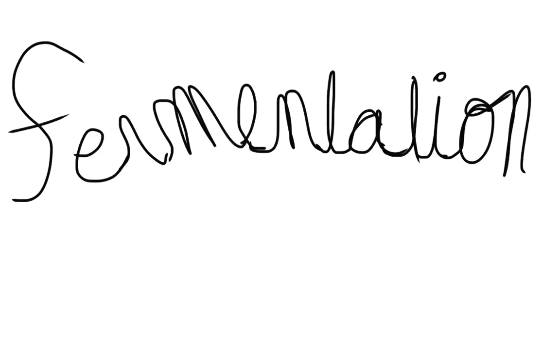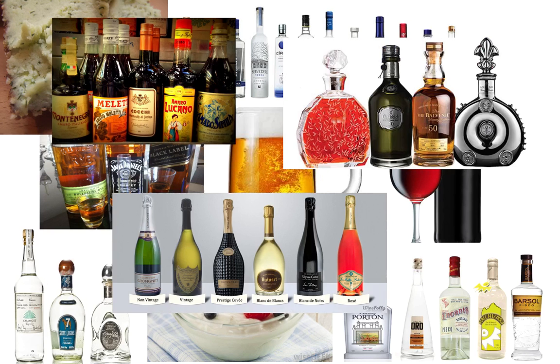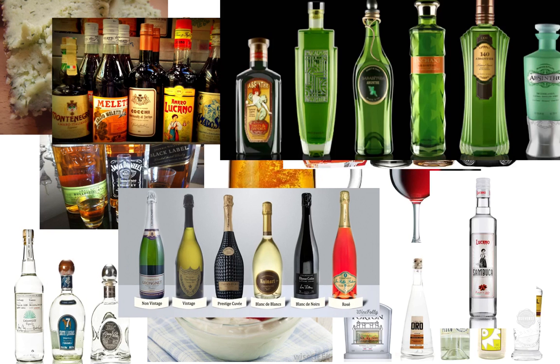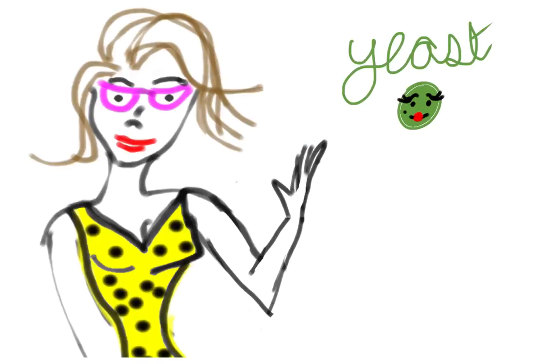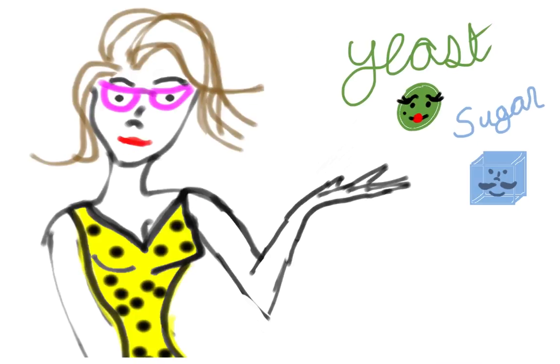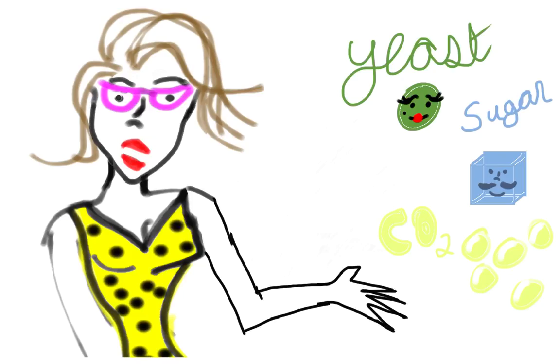Fermentation is the first step in the alcohol production process. It is used all the way from beer to whiskey and everywhere in between. Fermentation is when alcohol is produced — it is when yeast consumes sugar and produces CO2 and ethanol alcohol. It goes something like this.